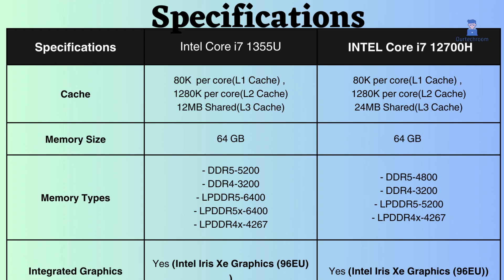Both Intel processors support a maximum of 64GB RAM and are compatible with both DDR5 and LPDDR5. However, the Intel Core i7-1355U benefits from higher frequency RAM, providing faster data access between the processor and RAM compared to the Intel Core i7-12700H.